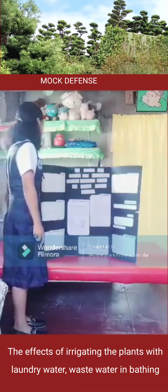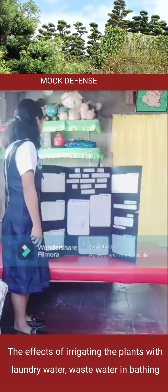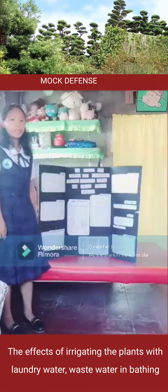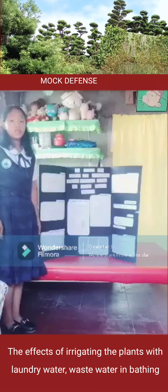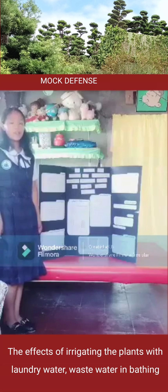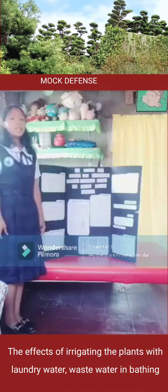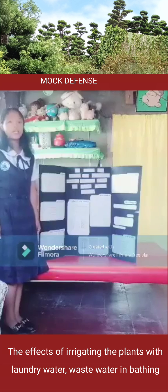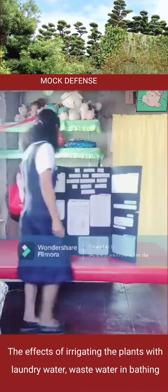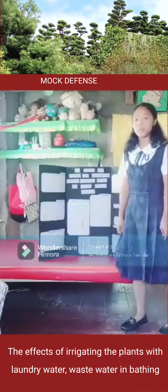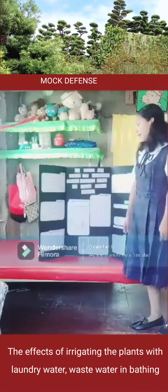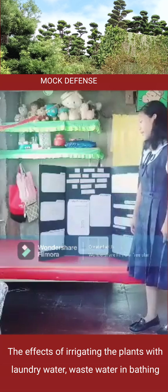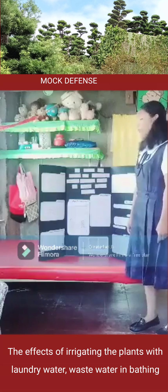After these three weeks of experimenting, the plants in Set A watered with laundry water grew an average of 74 centimeters. The plants in Set B watered with wastewater in bathing grew an average height of 64 centimeters, and the plants in Set C watered with tap water grew an average height of 77 centimeters. My hypothesis was supported — the plants are still alive and increased their heights. Therefore, laundry water and wastewater in bathing have a positive effect on the growth of the rough horsetail plants.